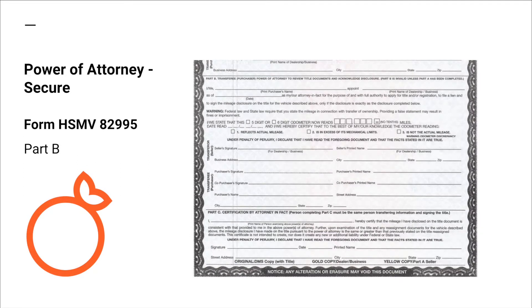Part B of form A2995 is only used if the vehicle is sold to an individual and the title is not available at the time of sale. Part C is filled out when the title has been printed and received for transfer. The person who fills out this section must be the one transferring the information to the title from Part A and Part B.